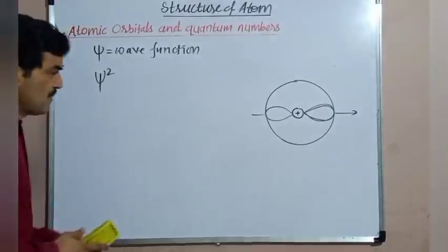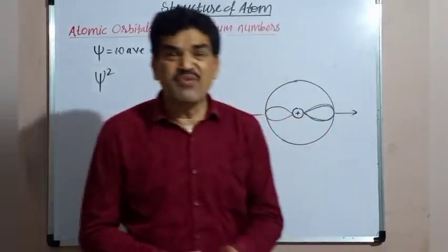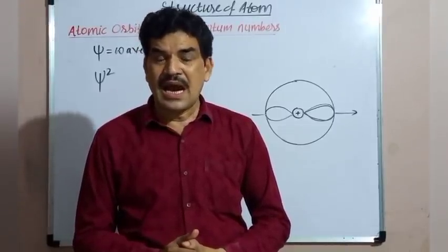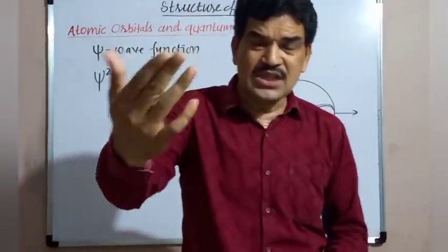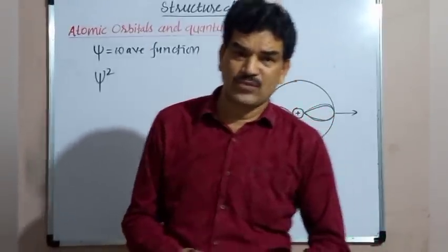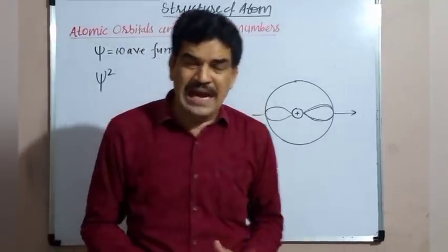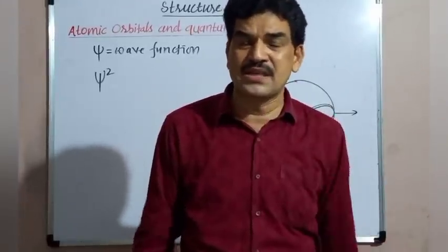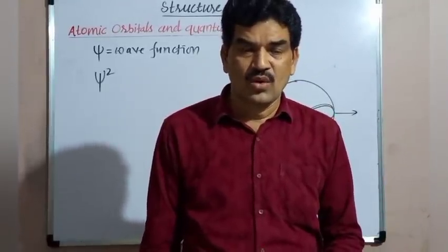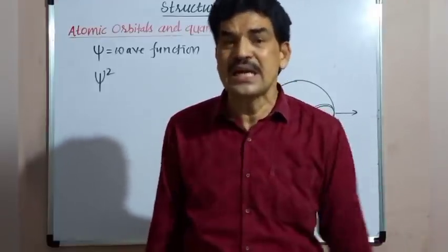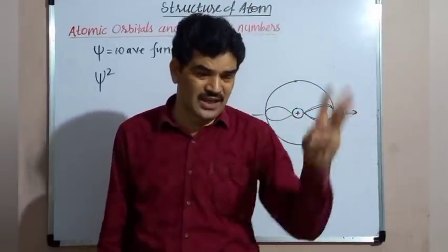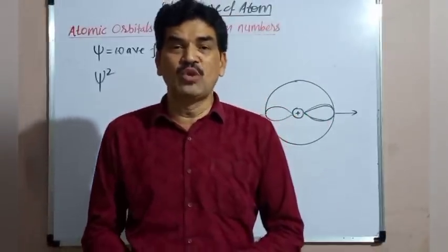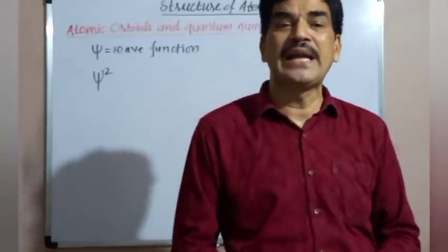In the atom, a number of atomic orbitals are possible, and for every atomic orbital, three quantum numbers are assigned. Every atomic orbital is assigned three quantum numbers. These three quantum numbers are the principal quantum number, azimuthal quantum number, and magnetic quantum number.